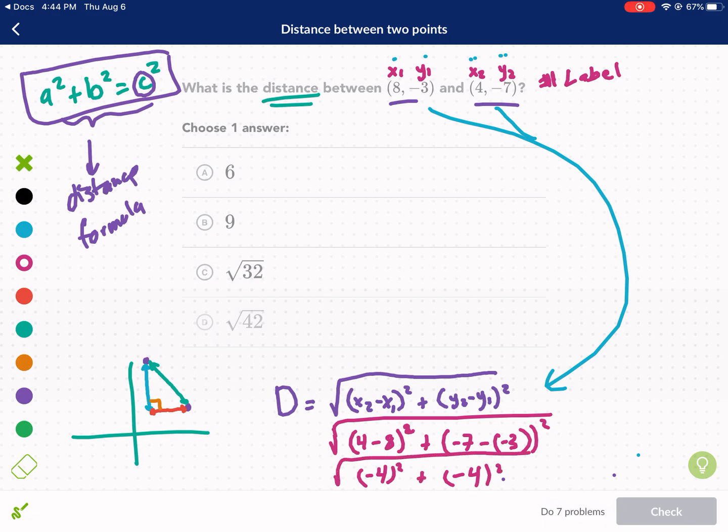Okay, now I have (-4)² plus (-4)² squared. That's the same thing as the square root of 16 plus 16. And we all know that's the same thing as the square root of 32. So, we have our answer.